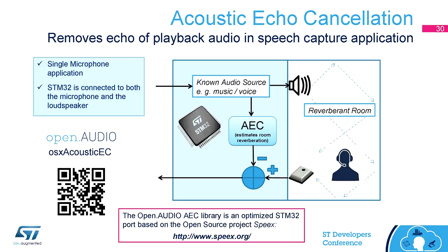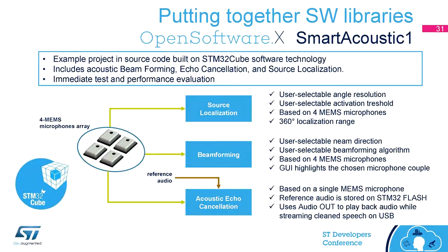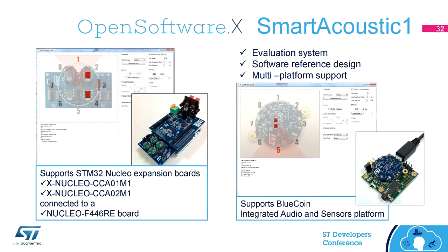We posted on the ST website last Friday a new example project called Smart Acoustic One, which I suggest you look at as a starting point for your design, because it includes the three routines I mentioned — beamforming, localization, and acoustic echo cancellation. You will find all the technical information on the website. You have at once all the audio processing routines and can test and experiment with them using the open development environment hardware, your own developer boards, or a board like the BlueCoin.